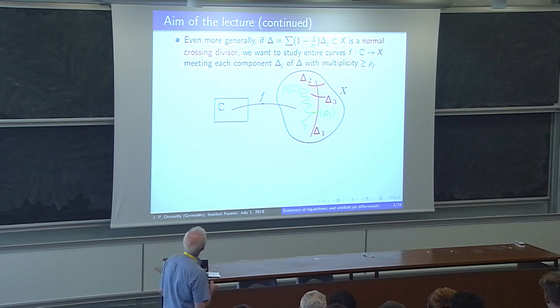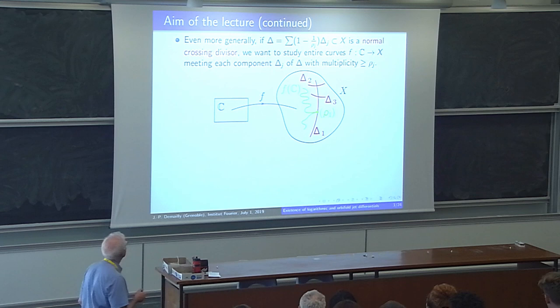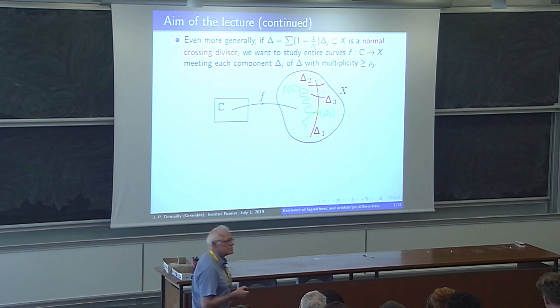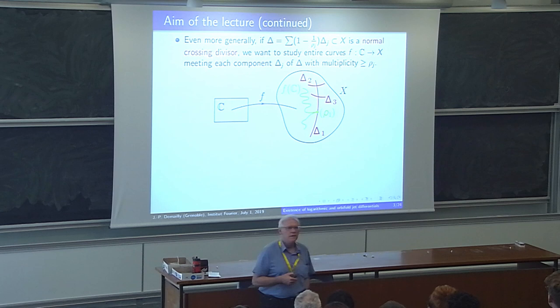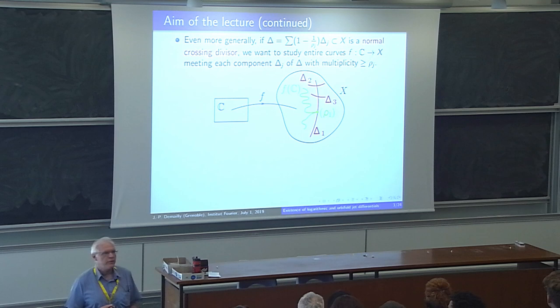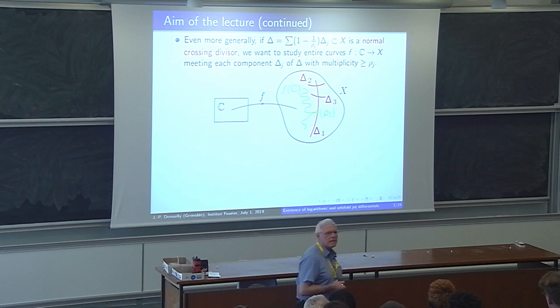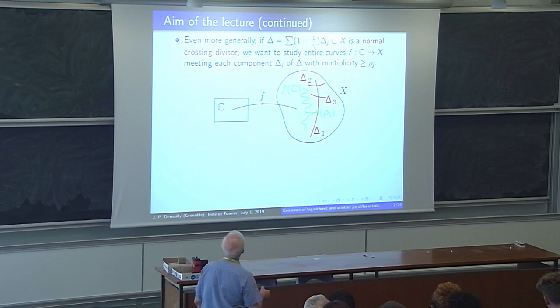Now we want to go to an even more general situation: the so-called orbifold situation in the sense of Campana. You take a divisor delta with arbitrary coefficients between 0 and 1 — usually rational, but in this lecture not even a constraint; we can take an arbitrary real divisor. The rho_j should be thought of as some sort of multiplicity, usually an integer, but you can take a real number. You assume rho_j to be at least one.